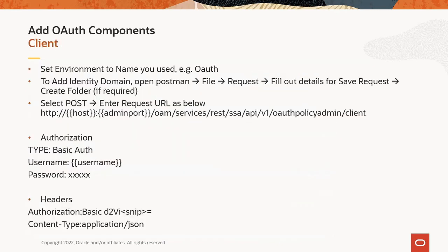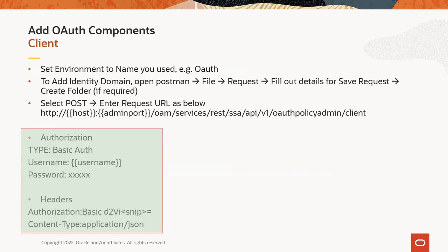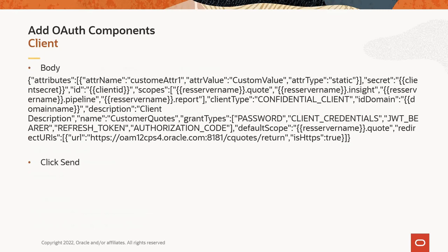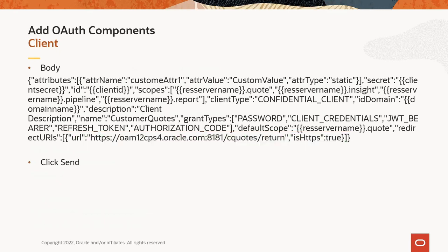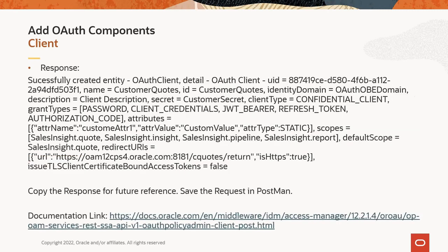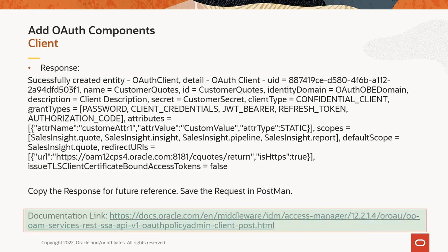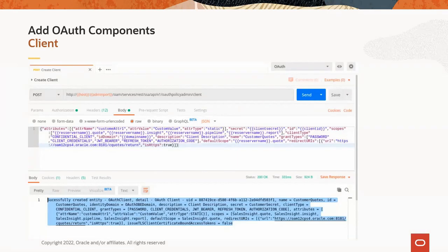This slide explains how to add a client. Steps on the Postman side are mostly the same — change the URL as shown. Add authorization and headers information to Postman and update the body of the request. Verify the redirect URL — OAM will redirect to this URL with the authorization code. Once all edits are complete, click Send. The slide shows the successful response — save the new request. The link here is the OAM document to add a client, along with a screenshot of the request to add a client from the lab.